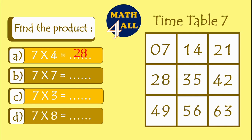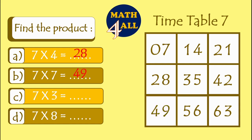The next example: 7 times 7. What should we do? We will count 7 on this table: 1, 2, 3, 4, 5, 6, and 7. So the answer is 49. 7 times 7 equals 49.